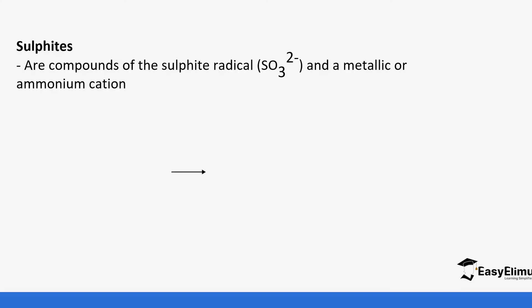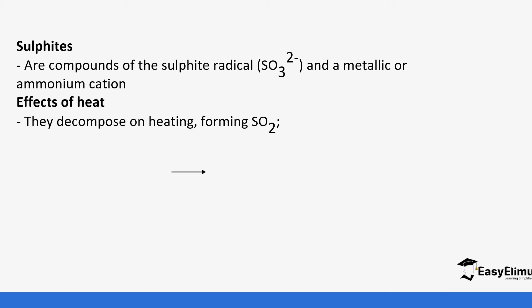Sulfates contain sulfate ions with a metallic or ammonium cation. When heated, they usually form sulfur dioxide (SO₂). For example, if you heat copper sulfate, it decomposes to form copper(II) oxide and sulfur dioxide.